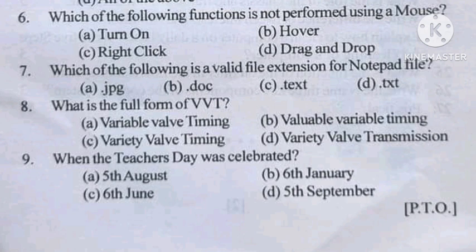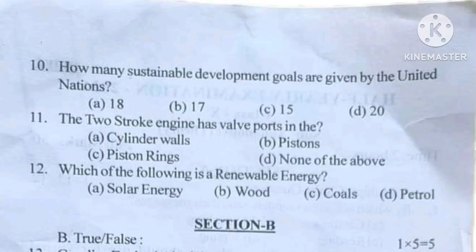Question number 10: how many sustainable development goals are given by the United Nations? The options are: 18, 17, 15, or 20?